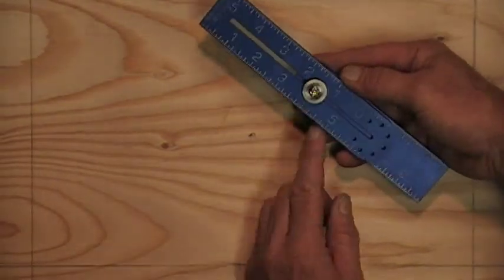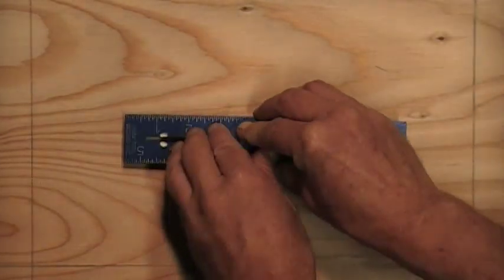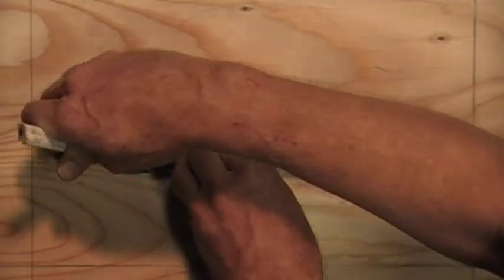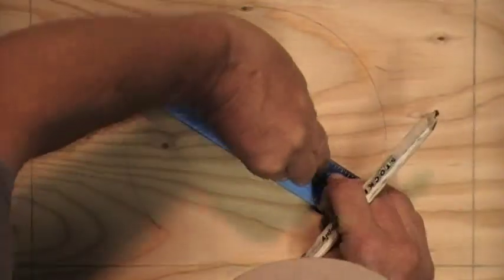Then using the screw end as an axis I just kind of press it into the wood like that and draw my circle.